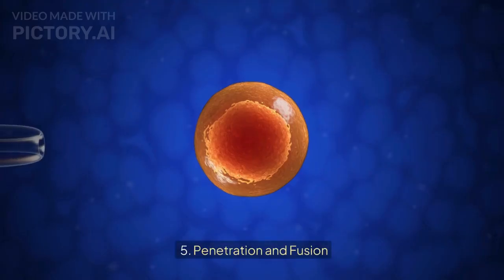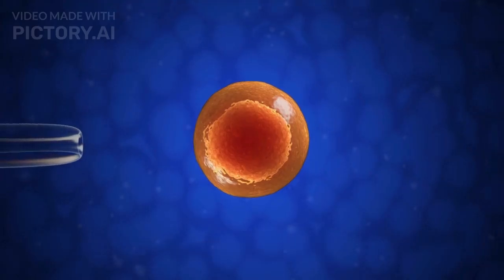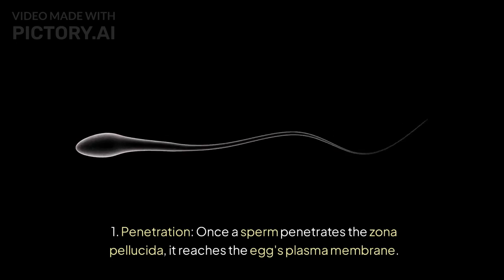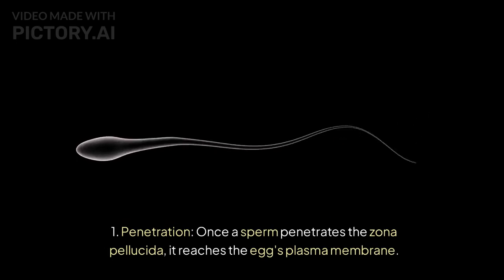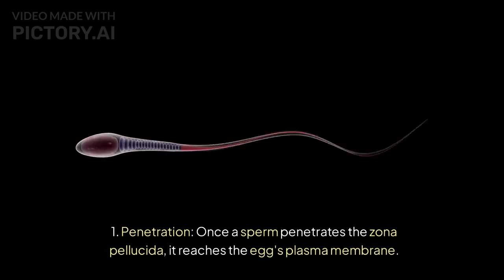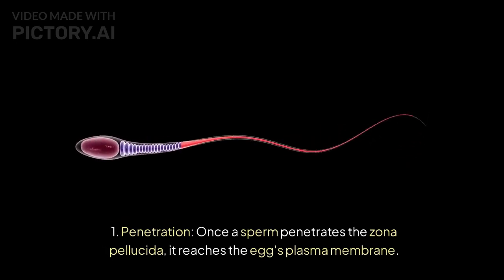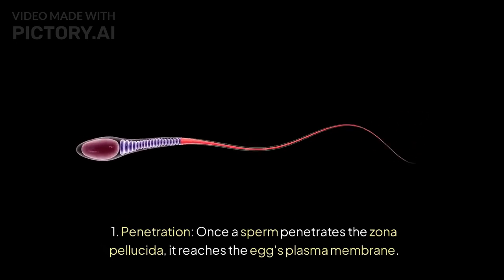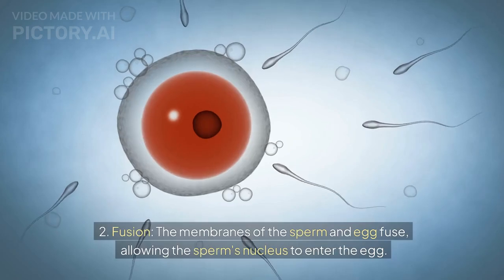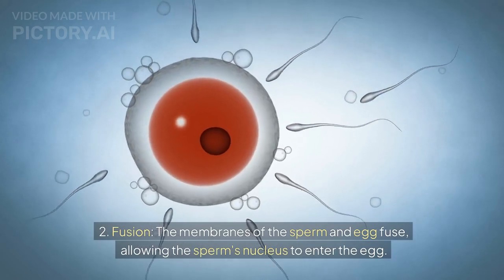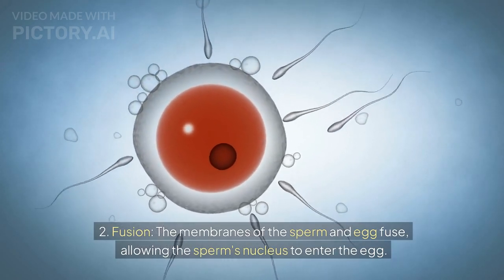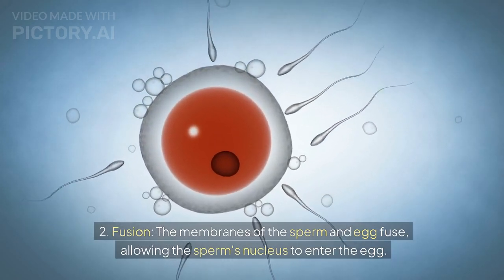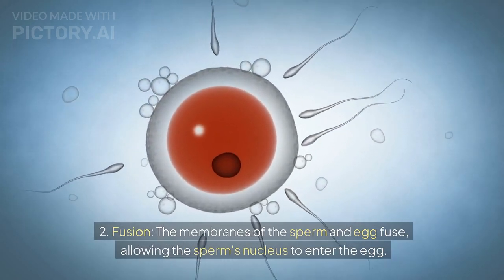Penetration and fusion. Once a sperm penetrates the zona pellucida, it reaches the egg's plasma membrane. The membranes of the sperm and egg then fuse, allowing the sperm's nucleus to enter the egg.